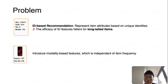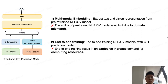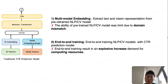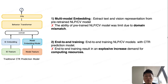However, the question remains: how to introduce modality-based features? The first method is extracting text and vision representations from pre-trained NLP or computer vision models. However, the original pre-trained model's ability is limited due to domain mismatch. Some research papers suggest training NLP or computer vision models end-to-end with CTR prediction models. However, this approach results in an explosive increase in demand for computing resources.